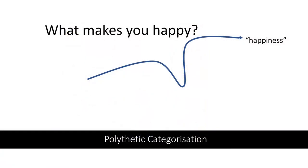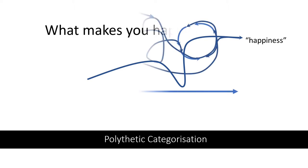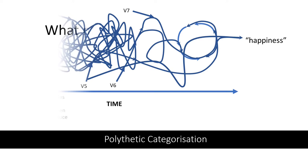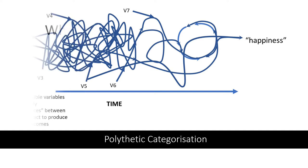So think about, for example, what makes you happy? Now whatever variables might be identified among the things that can make you happy, they have very complex interrelationships. Happiness obviously can be produced in many possible ways, with many different kinds of variables entering into the equation. But all these variables combine to produce the same result over time.